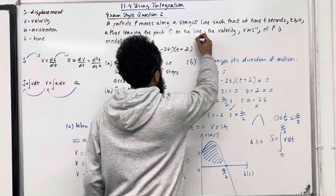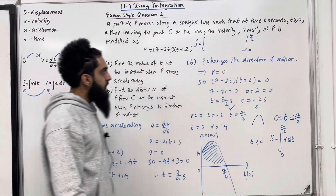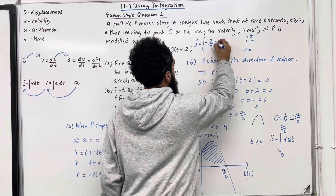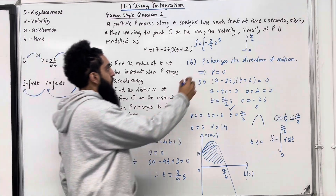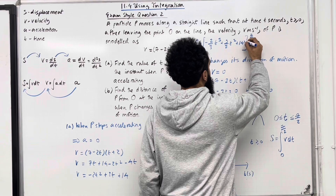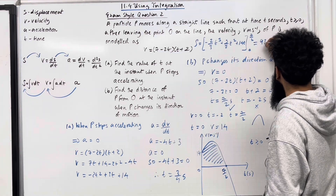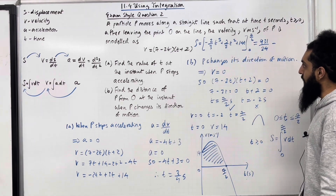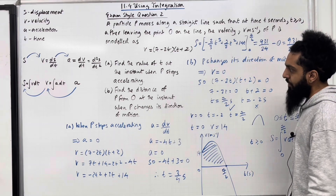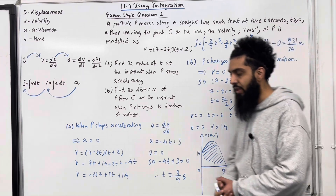S = ∫₀^(7/2) (−2T² + 3T + 14) dT. Integrating term by term: [−(2/3)T³ + (3/2)T² + 14T] from 0 to 7/2. Substituting T = 7/2 gives 931/24. Substituting T = 0 gives 0. So the distance of P from O at the instant when P changes its direction of motion is 931/24 metres.